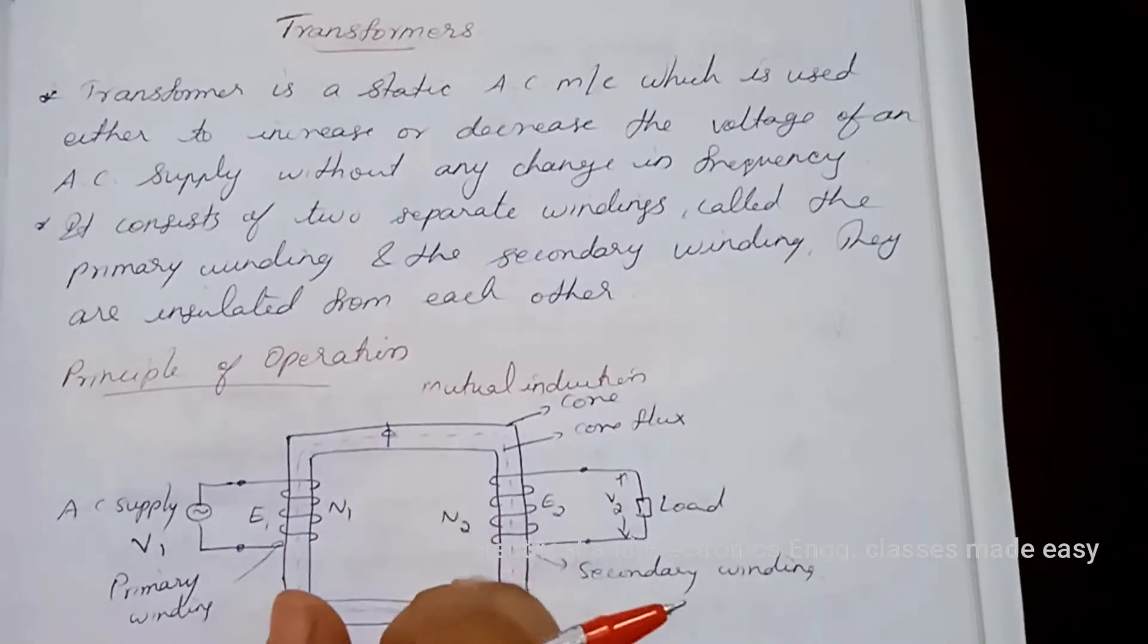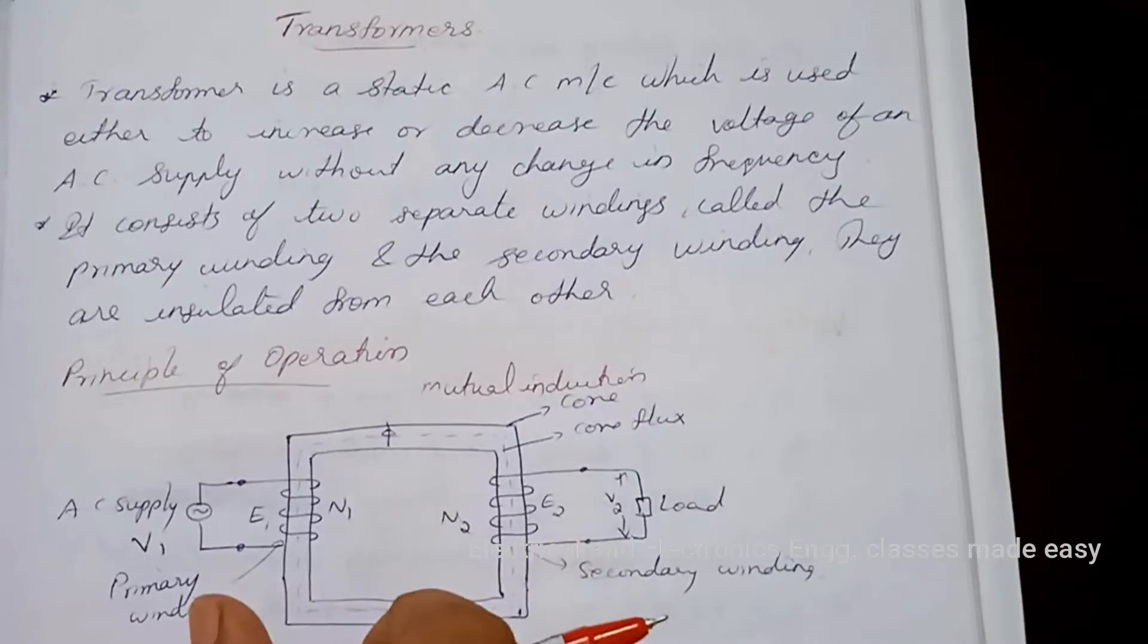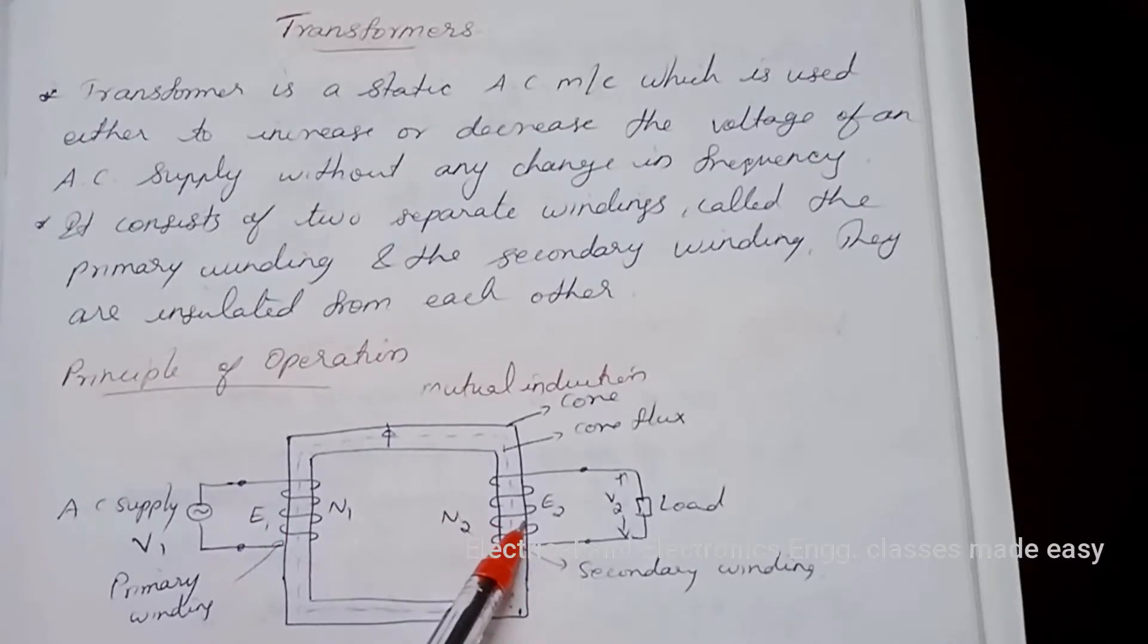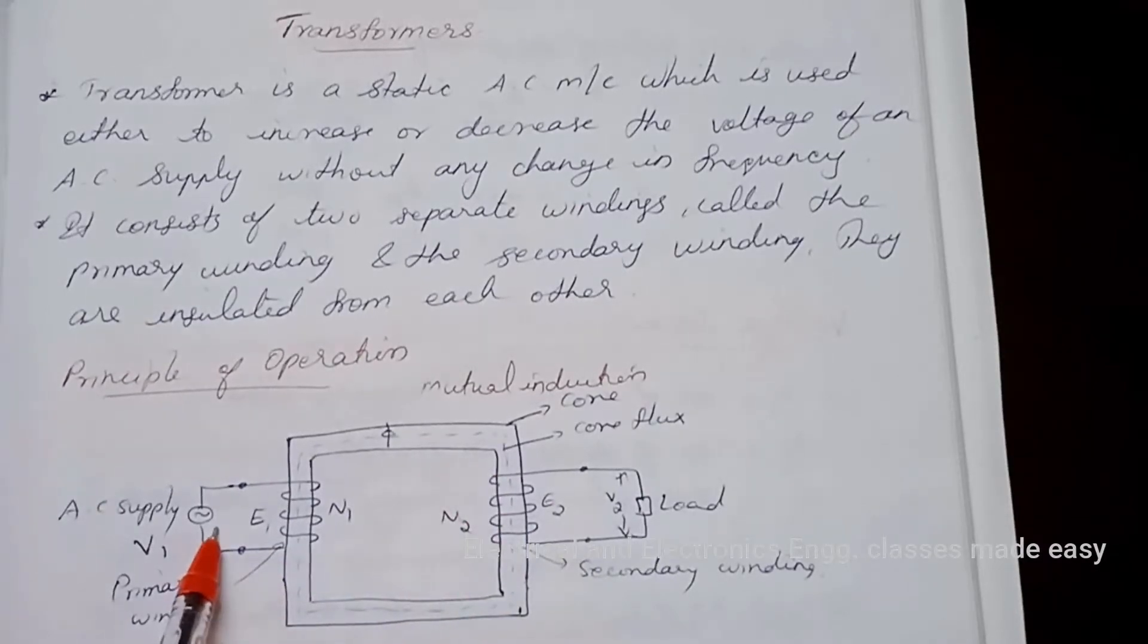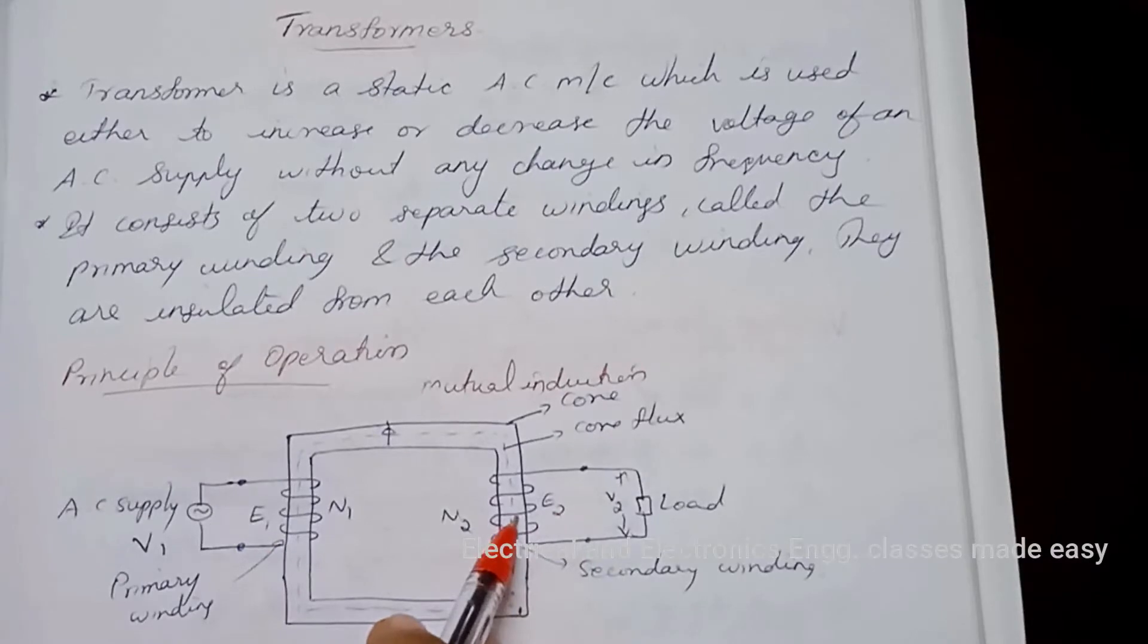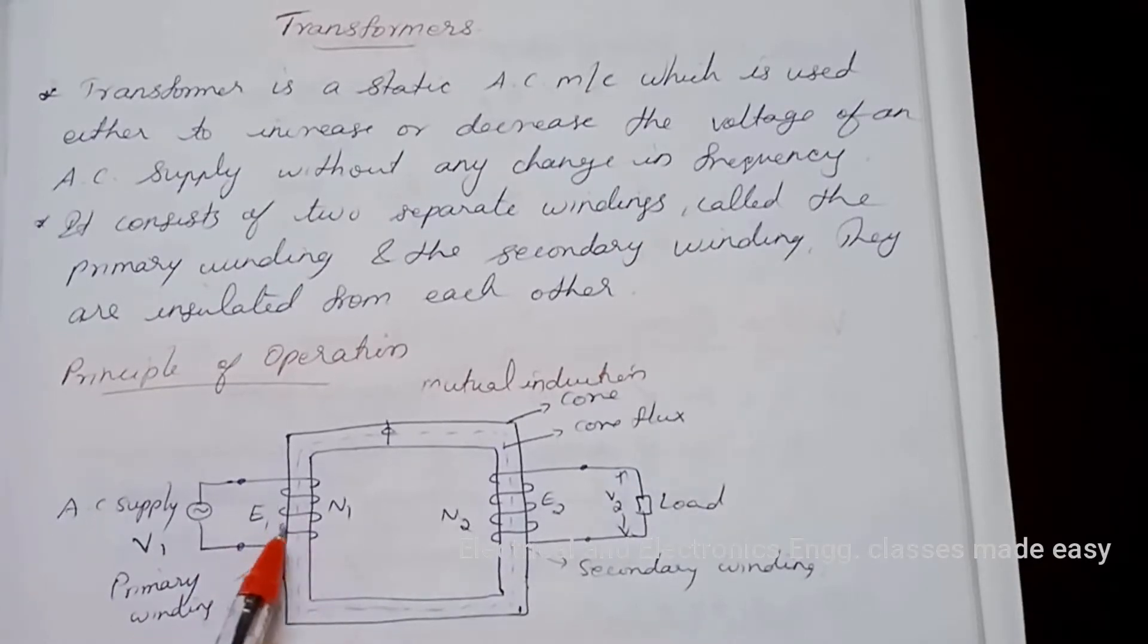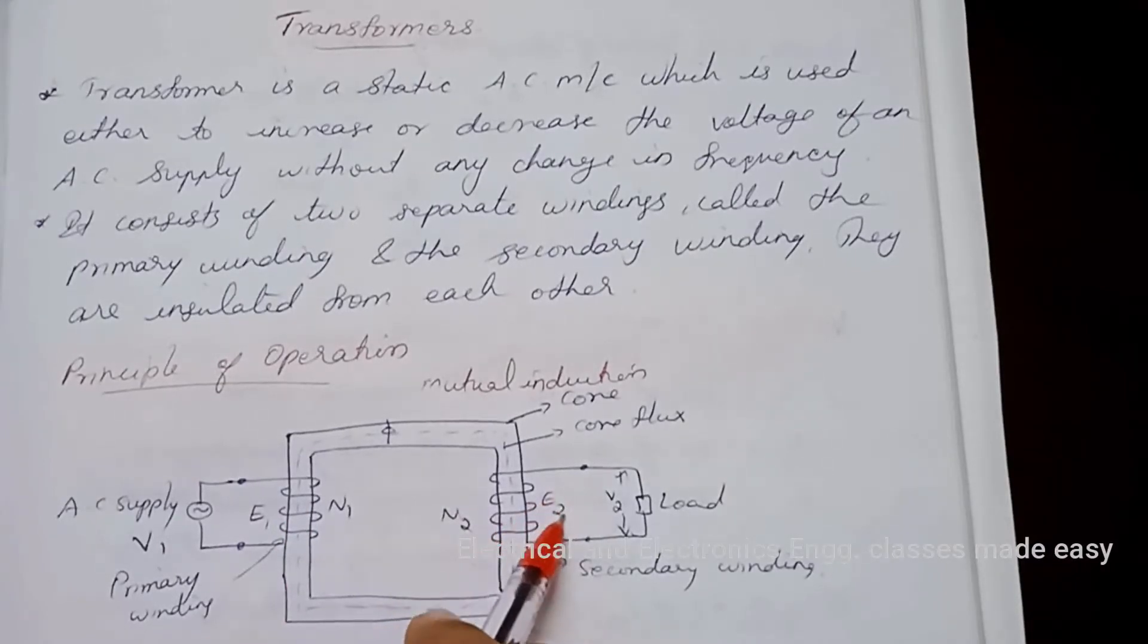Mutual induction between two coils linked by a common magnetic flux. The two windings are electrically separated from each other but magnetically coupled. It consists of two windings, the primary and the secondary, bound on a common laminated magnetic core. The winding connected to the AC source is called the primary winding, and the alternating voltage V1 is applied to the primary.